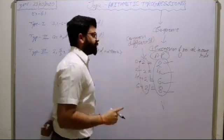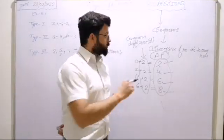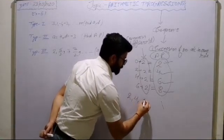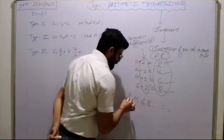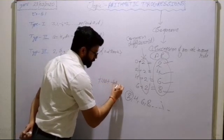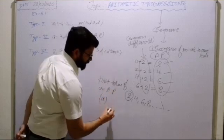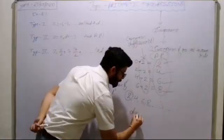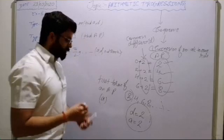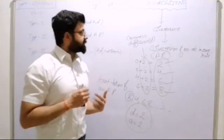Generally, the common difference is denoted by small 'd' — it's not mandatory, but we generally use small 'd'. The first term of the AP — like in the sequence 2, 4, 6, 8 — is denoted by small 'a'. So in this case, d is equal to 2 and a is also equal to 2. Both things happen to be the same here.